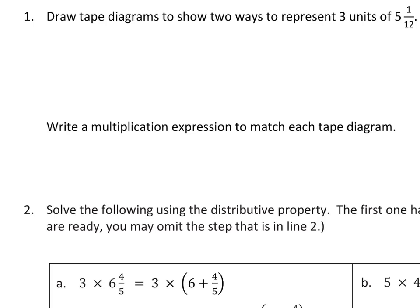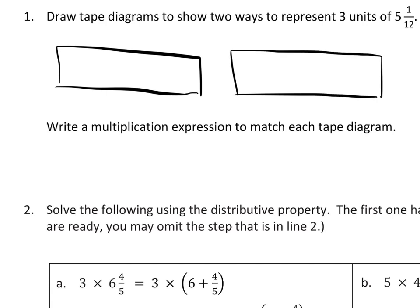On number one, let me get my colors here changed. On number one, it wants you to draw two tape diagrams, two, to represent three units or sets of five and one twelfth. Now, a lot of students get confused on number one, but I think this is a really good way for you to look at what distributing is. So we want two tape diagrams. I'm going to do two. I'm going to try to draw them nearly the same size because they're both going to have the same total. And they want three units of five and one twelfth. Well, you know, one way I would do that is think of five and one twelfth, five and one twelfth, and five and one twelfth, right? Three sets of five and one twelfth.